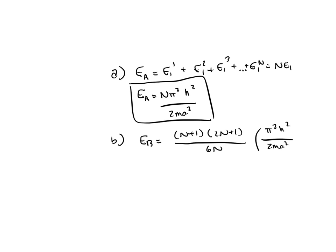And we get e sub b for lowest equals pi squared h squared over 2m a squared.